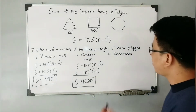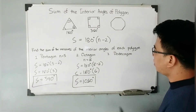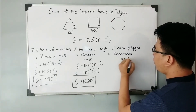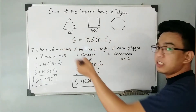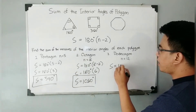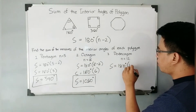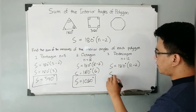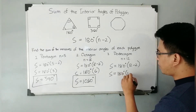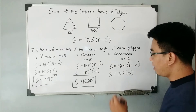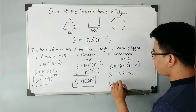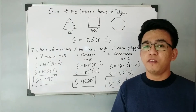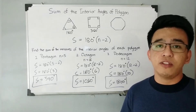And lastly, for number 3: dodecagon. A dodecagon has 12 sides, meaning N = 12. Using the formula, S = 180 degrees times (12 - 2), which is 180 degrees times 10. Multiplying 180 degrees by 10, the sum is equal to 1,800 degrees. So that is the sum of the interior angles of a dodecagon.